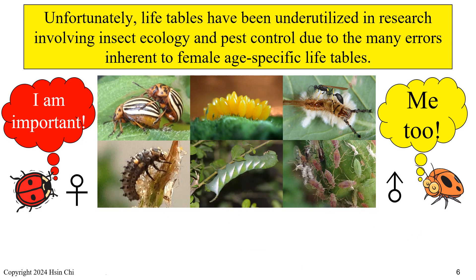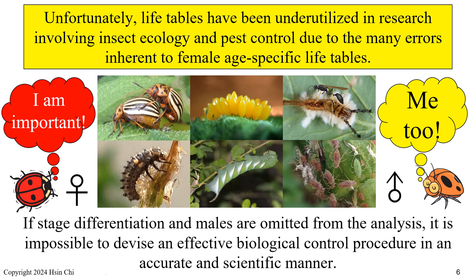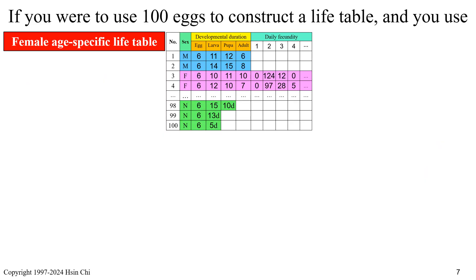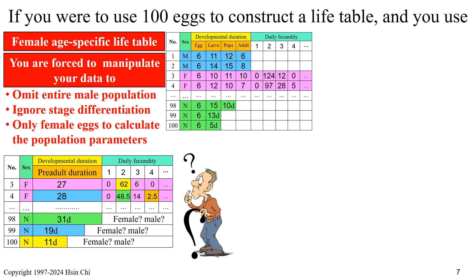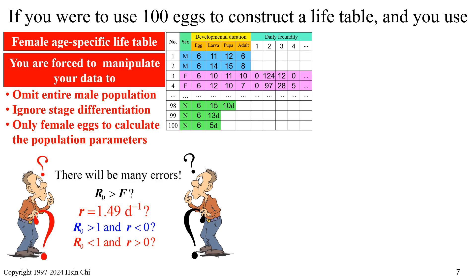Unfortunately, life tables have been underutilized in research involving insect ecology and pest control due to the many errors inherent to female age-specific life tables. If stage differentiation in males are omitted from the analysis, it is impossible to devise an effective biological control procedure in an accurate and scientific manner. If you were to use 100 eggs to construct a life table using the female age-specific life table, you would encounter many problems. You are forced to manipulate your data in order to omit the entire male population, and you would be unable to describe the stage differentiation.